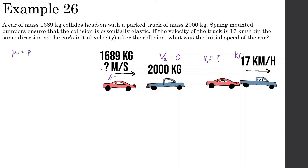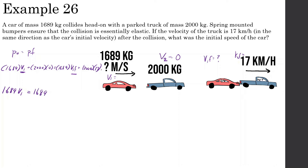Momentum initial equals momentum final. Before the crash, we have the 1689 kg car moving with unknown velocity V1, and the 2000 kg truck parked with an initial velocity of 0. After the crash, the 1689 kg car moves with unknown V1 final, and the 2000 kg truck moves at 17 km/h. So: 1689·V1 = 1689·V1_final + 2000×17.